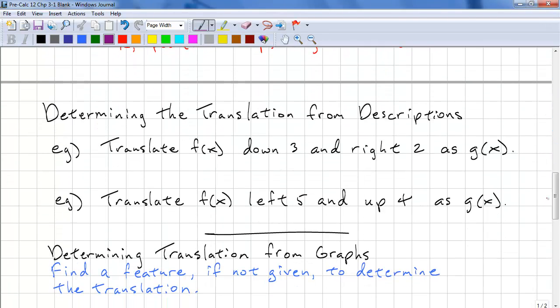Another skill that you have to learn is determining the translation from the descriptions. Here's an example. Translate f of x down 3 and right 2 as g of x. We just write g of x equals f of x right 2, so it's minus 2 and down minus 3.